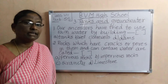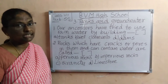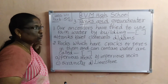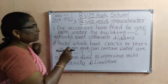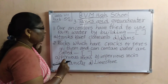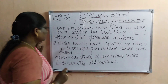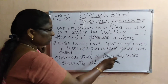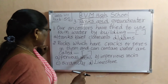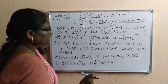I have completed the second lesson worksheet. Now, worksheet for the third lesson — that is Plants and Groundwater. First one: our ancestors have tried to use rainwater by building dash. Options: tanks, wells/borewells, dams. Second one: rocks which have cracks or pores in them and can contain water are called dash. Options: pervious rocks, impervious rocks, granites, limestones.